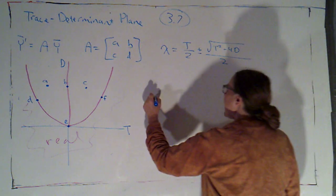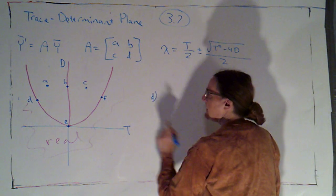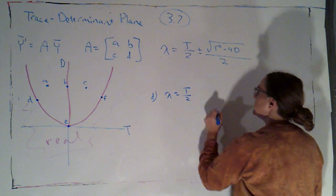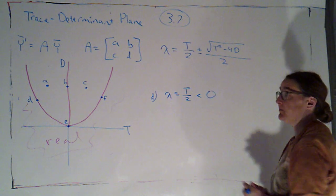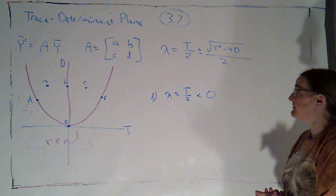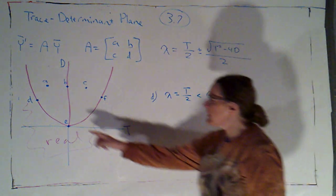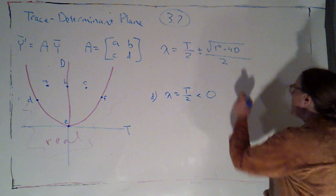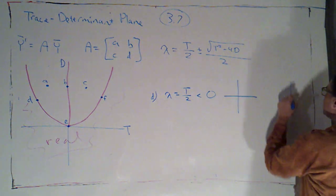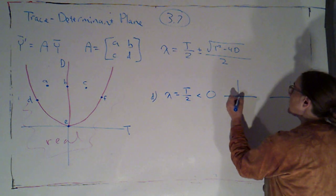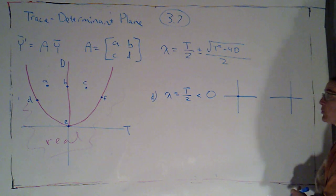So if I'm at point D, that's telling me that my only eigenvalue is lambda equals t over 2, which is going to be negative because t is negative. So I would have one eigenvalue. Now, knowing that I have one eigenvalue isn't enough for me to know whether I can find two independent eigenvectors or just one. So there are two possibilities for my phase portrait here.